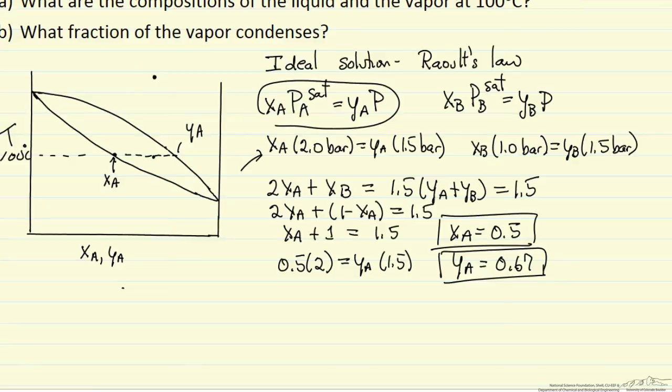So what we're going to do is a mass balance. The overall mole fraction of A at the start times the total of one mole is equal to mole fraction of A in the liquid phase times the number of moles in the liquid phase plus the mole fraction of A in the vapor phase times the number of moles in the vapor phase. So this is 0.6 times 1, and this is 0.5, we're solving for the liquid, 0.67. Well the vapor in the liquid must add to 1, so the vapor is 1 minus the liquid.